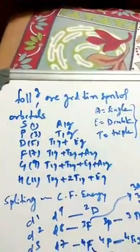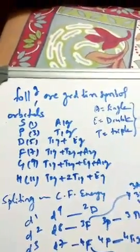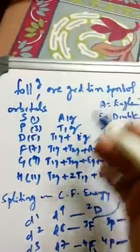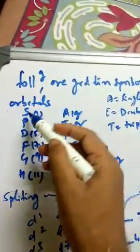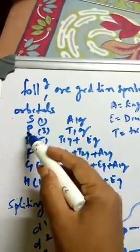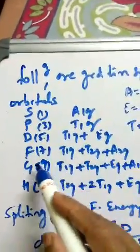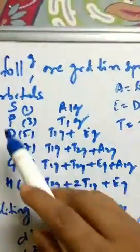Welcome to fourth class. In the last class we learned about Orgel diagram features. Today we go to the next topic. These are the ground term symbols and how they split in crystal field splitting. For s orbital we have 1, p has 3 orbitals, d has 5 orbitals, f has 7, and g has 9. For s orbital, the Mulliken symbol given is A1g.